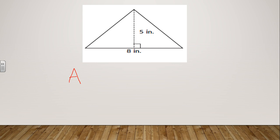I think it's become so easy now. This lesson has only one formula, so it's straightforward. The area of a triangle equals half times base times height, so that will equal half times eight times five.